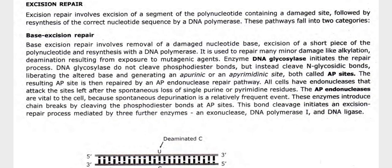DNA glycosylases do not cleave phosphodiester bonds but instead cleave N-glycosidic bonds, liberating the altered base and generating an apurinic or apyrimidinic site, both called AP sites. The resulting AP site is then repaired by an AP endonuclease repair pathway. AP endonucleases attack sites left after the spontaneous loss of single purine or pyrimidine residues, and are vital to the cell because spontaneous depurination is a relatively frequent event. The enzyme induces strand breaks by cleaving phosphodiester bonds at AP sites, initiating an excision repair process mediated by an exonuclease, DNA polymerase I, and DNA ligase.